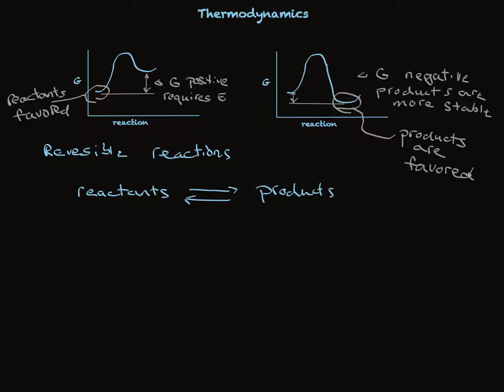Positive delta G values favor reactants, and negative delta G values favor products. Which is another way of saying the equilibrium will favor either the reactants or the products, whichever is collectively the more stable.